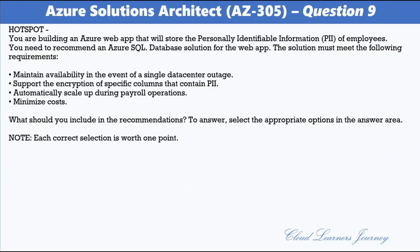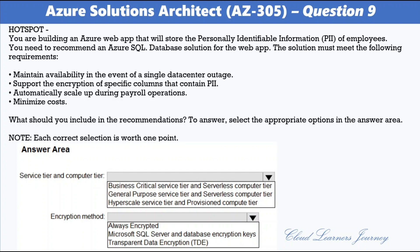Question 9. You are building an Azure web app that stores personally identifiable information of employees. You need to recommend an Azure SQL Database solution meeting these requirements: maintain availability in the event of a single data center outage; support encryption of specific columns containing PII; automatically scale up during payroll operations; and minimize cost. The recommended service tier and compute tier is General Purpose service tier with Serverless compute tier. The encryption method is Always Encrypted. The General Purpose service tier is designed for common workloads, offering budget-oriented balanced compute and storage options.